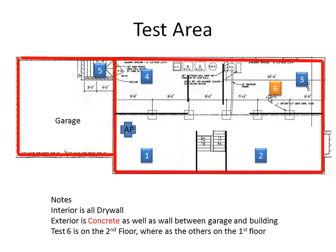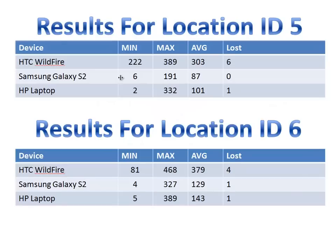The last two points: five is in the garage with a concrete wall and a steel door, and six is on the far end on the second floor. At location five, the Wildfire had a 300ms average with six lost packets. The Samsung Galaxy had only an 87ms average with no lost packets — a huge surprise. The laptop had a 101ms average with one lost packet. At location six upstairs, the HTC had a 379ms average with four lost packets, the Samsung Galaxy S2 had 129ms, and the laptop had 143ms, both with one lost packet each.